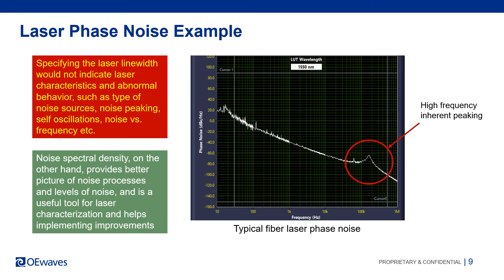Here, as an example, we see a phase noise plot of a fiber laser as measured with the OE 4000. One can see a peak at about 200 kHz offset — it is due to the laser relaxation oscillations. Such a peak would be hard and even impossible to describe in terms of line width. However, noise spectral density measurement can easily identify it, and this could be very important and valuable for applications requiring low noise at this particular frequency offset.